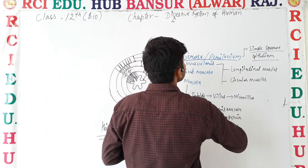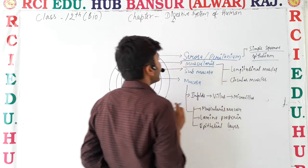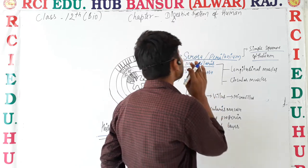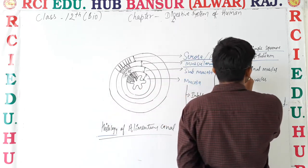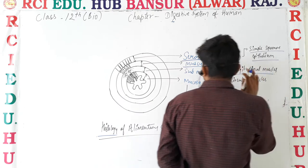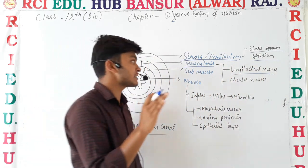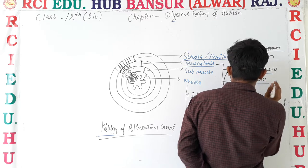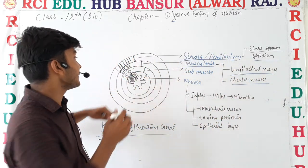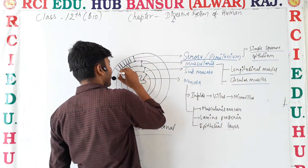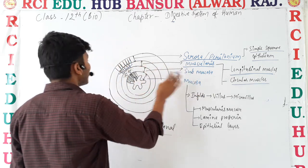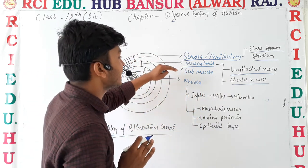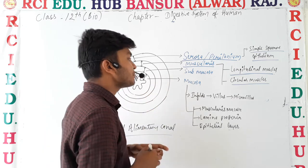Just below the serosa, there is another layer present. That layer is known as muscularis. Muscularis consists of two types of muscles or two layers: the outer layer is the longitudinal muscle, and inside that is the circular muscle.